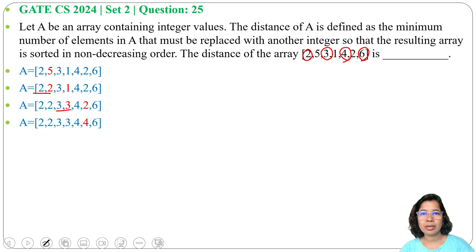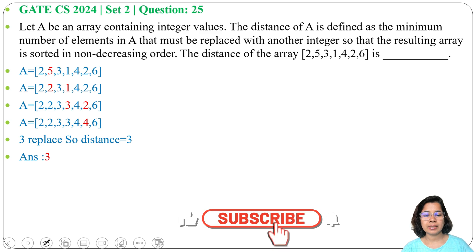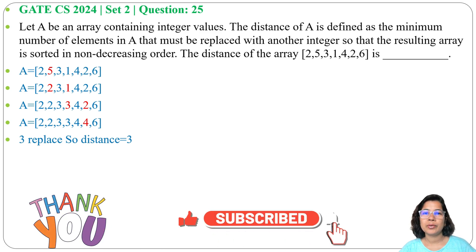It's in increasing order, not strictly, so it can be less than or equal to. We need to do 3 replacements to make it sorted. That's why the distance is 3. Answer is 3.